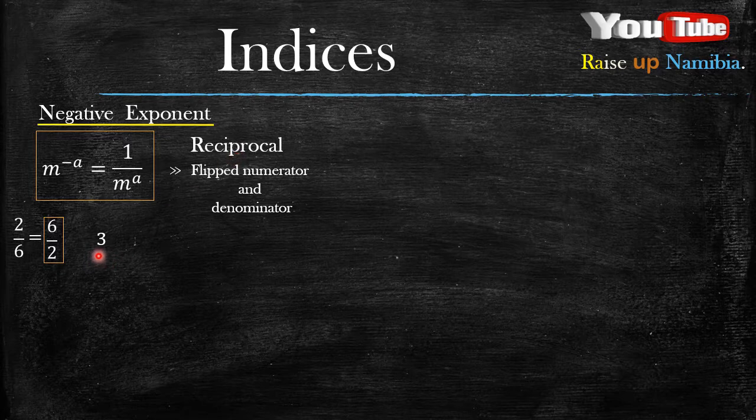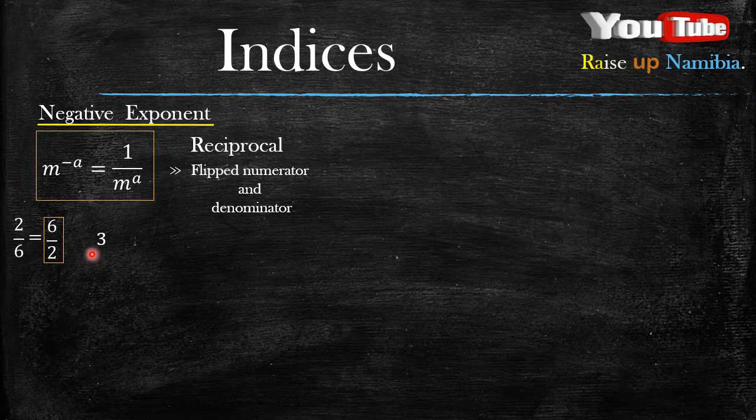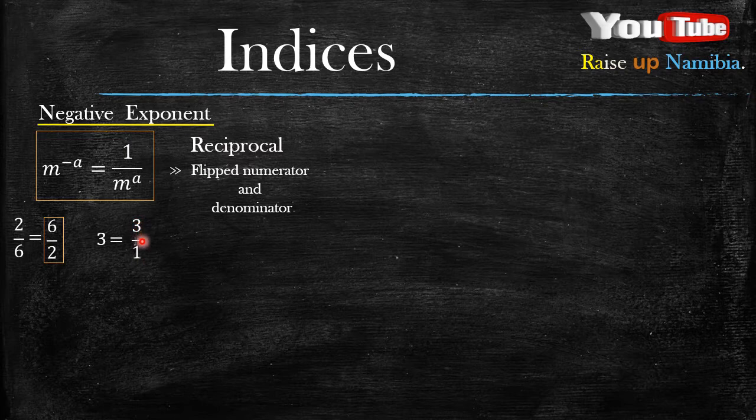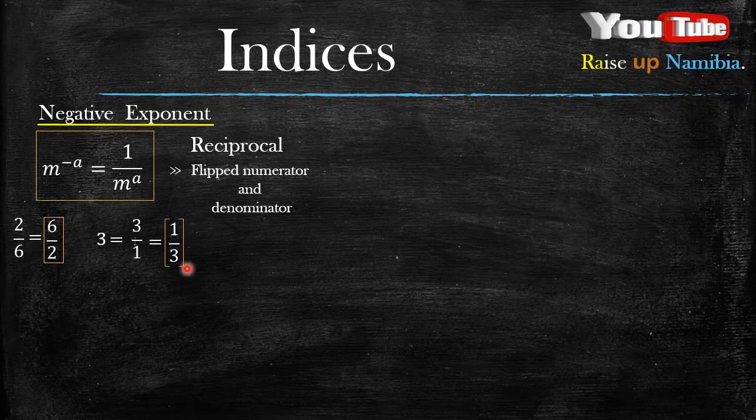you make this 1 digit a fraction. So how do you do that? You do that by putting it over 1. Now once it's 3 over 1, the reciprocal for 3 over 1 will be 1 over 3.